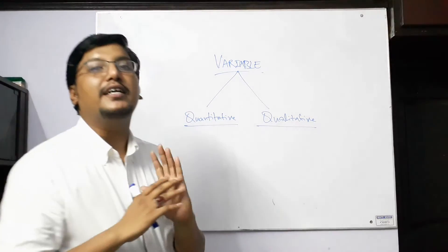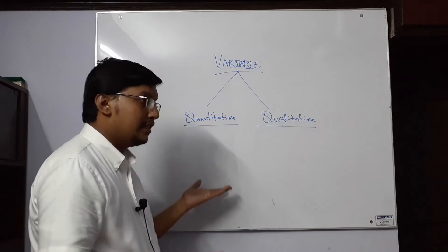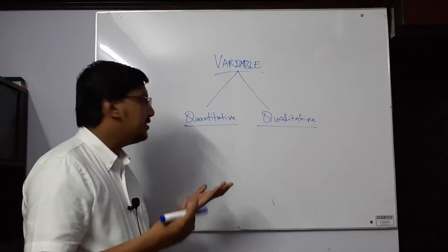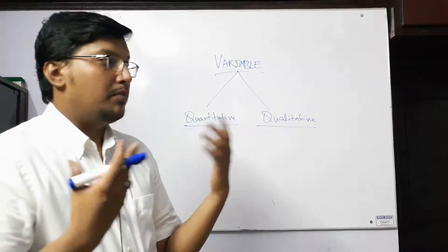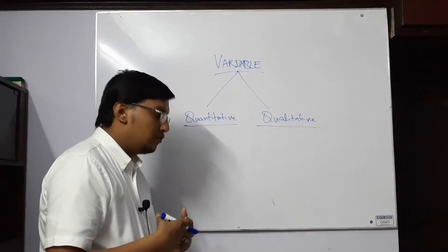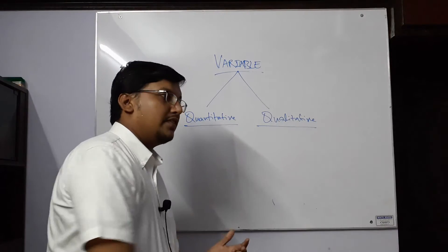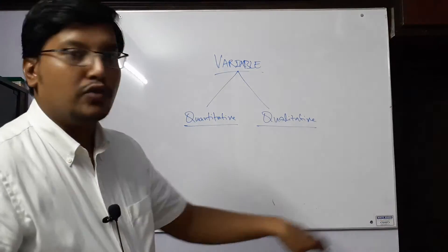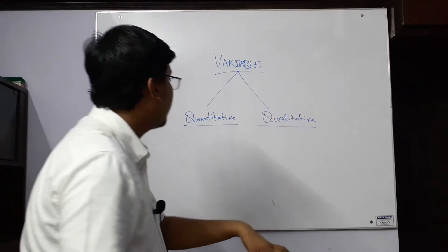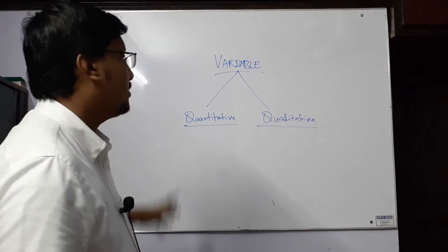Now we will talk about quantitative variables, in which we deal with numbers. Examples of quantitative variables include: number of rooms, number of students in a classroom, and any variable that receives numerical values such as marks of students in a specific classroom. These are the examples of quantitative variables.